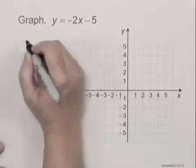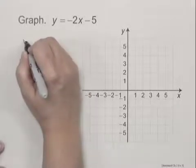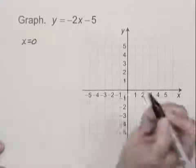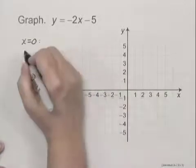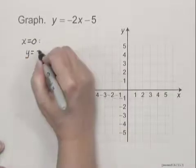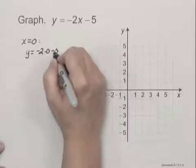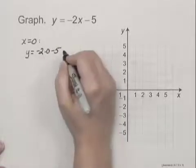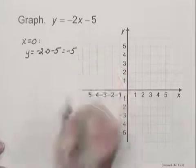We'll choose some values for x. So we'll start with x equals 0. And when x equals 0, we have y equals negative 2 times 0 minus 5, which is 0 minus 5 or negative 5.